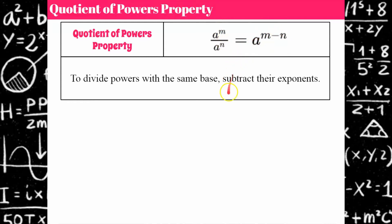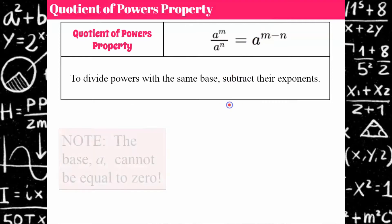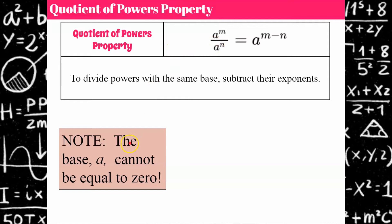Here's why it works. Special note as well: A cannot be equal to zero, because then you'd have zero in your denominator and that's undefined. So this property only works when the base of the power is not zero.